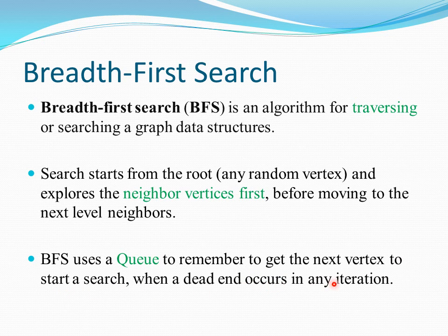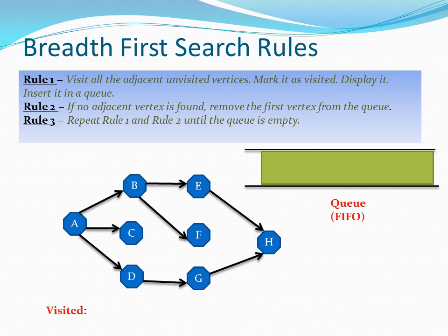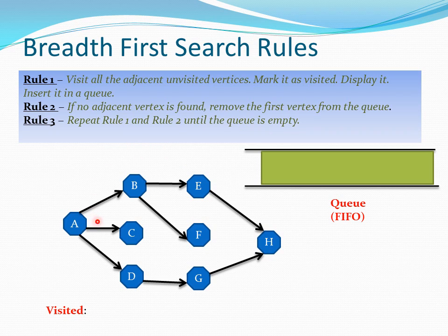Now we are going to see what are the three major rules for Breadth-First Search and visualize that through animation. Rule one: visit all the adjacent unvisited vertices, mark them as visited, display them, and insert them in a queue. Rule two: if no adjacent vertex is found, remove the first vertex from the queue. Rule three: repeat rule one and rule two until the queue is empty.